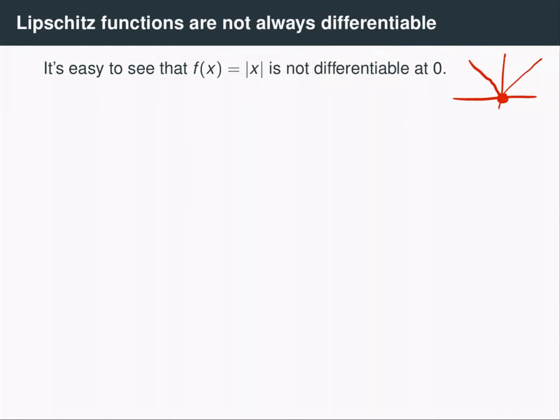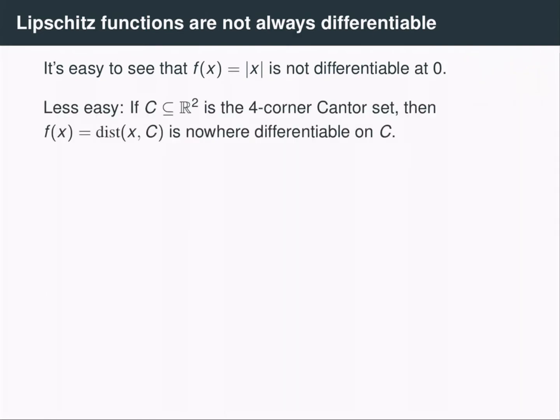Now you might think, okay, well this is a very exceptional case. The Lipschitz function, the function absolute value of x, is clearly differentiable everywhere else. So it turns out that you can still make the set of non-differentiability points quite erratic.